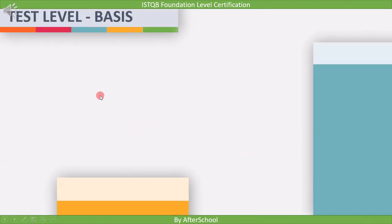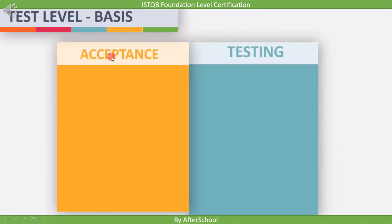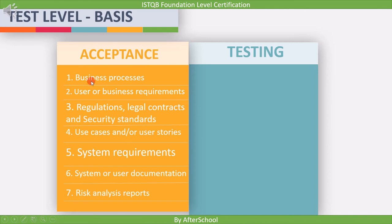Now let's move to acceptance testing. If you see any high-level document, you can consider it as a requirement for acceptance testing. For example, the first requirement is business process, user or business requirements — these documents contain high-level requirements used to verify if the developed software meets expectations. The next point is standards, such as regulations, legal, or security standards, which are used to verify if the developed software complies with those standards.